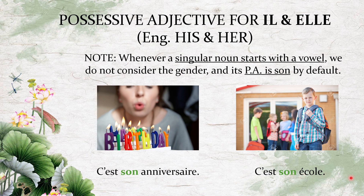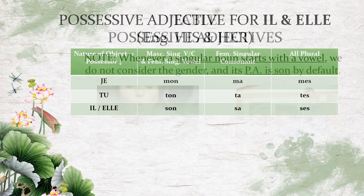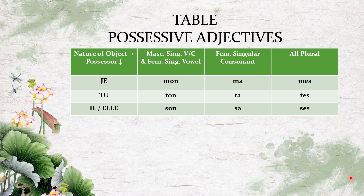The vowel rule is the common thread running through all three types of possessive adjectives covered here. Here is a summary table that brings together the first three persons' possessive adjectives — for je, tu, il, and elle — showing how you say my, your, his, and her in French. In the next part, we will look at the remaining three persons. Thank you.